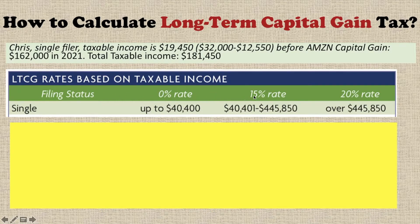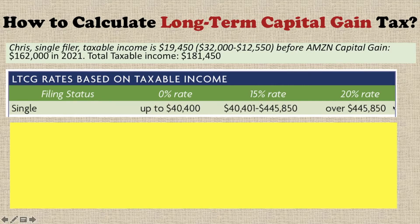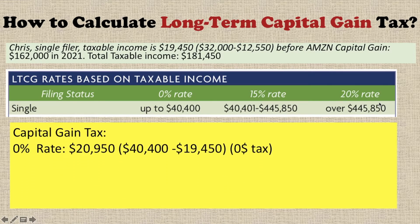Once you have the total taxable income, you can apply the long-term capital gain tax rates. There are three tax brackets: 0%, 15%, and 20%. If your taxable income is below $40,400, your long-term capital gain is taxed at 0%. If it's between that and the next threshold, it's taxed at 15%. If your taxable income is above the upper threshold, the long-term capital gain is taxed at 20%.